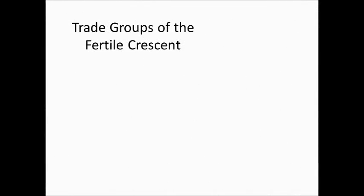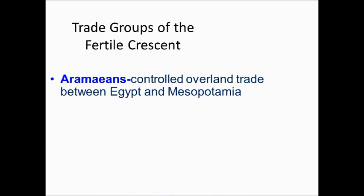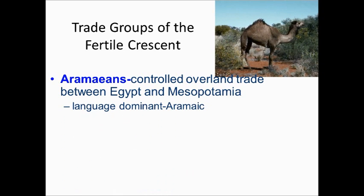One of the first groups we're going to talk about are people who traded in the Fertile Crescent region. The first group are the Arameans, who controlled overland trade between Egypt and Mesopotamia. They so dominated trade in this region that their language, Aramaic, became dominant. Many portions of the Bible were written in Aramaic because it dominated the area that fully.